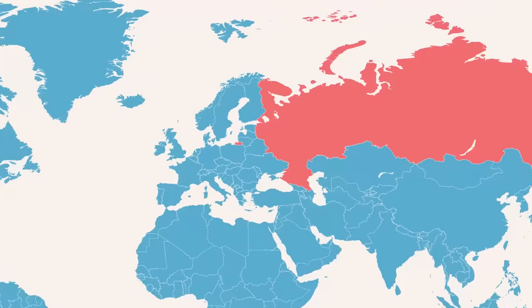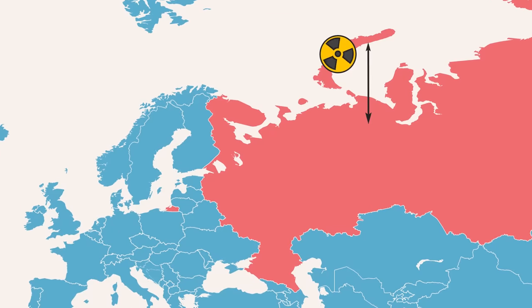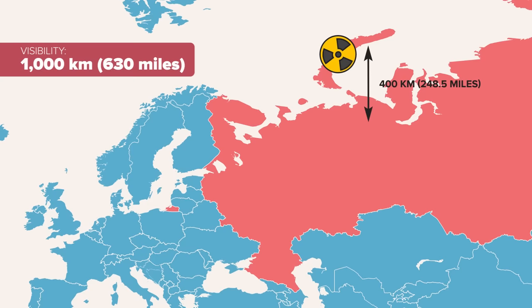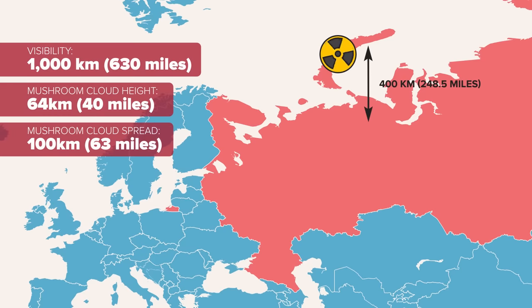When it did drop and detonate on Severny Island, part of the Nevoia-Zemlya archipelago about 250 miles off the Russian mainland, the blast could be seen 630 miles away. The actual mushroom cloud reached 40 miles in height and spread over a distance of around 63 miles.